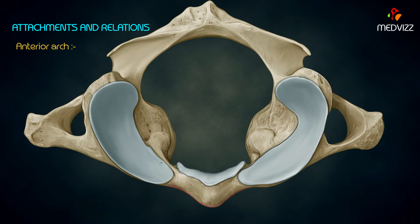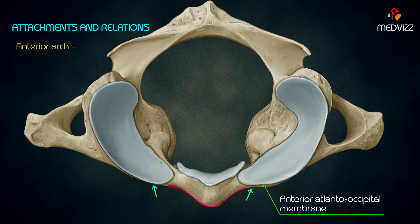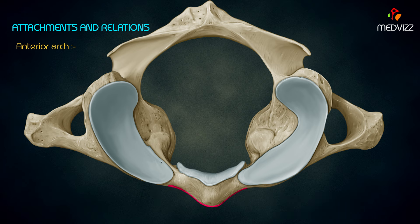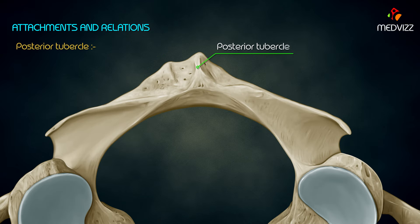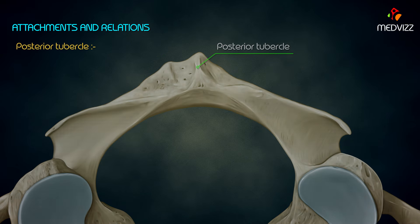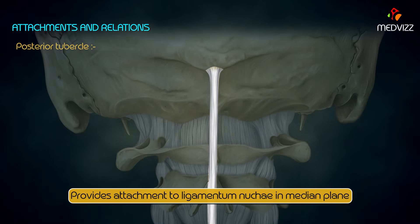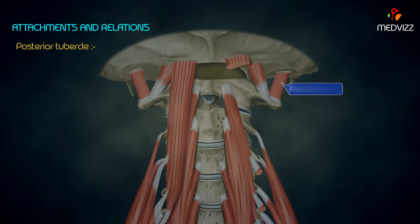The anterior tubercle provides attachment to the anterior longitudinal ligament and insertion on each side to the upper oblique part of longus colli. The upper border of the anterior arch gives attachment to the anterior atlanto-occipital membrane, and the lower border gives attachment to the lateral fibers of the anterior longitudinal ligament.